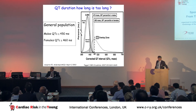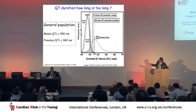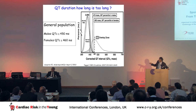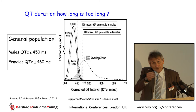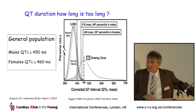Making this measurement is not straightforward because there is an overlap zone between subjects with genetic QT abnormalities and the normal population. There is no clear cutoff value. However, it has been proposed that in the general population, corrected QT must be less than 450 milliseconds in males and 460 milliseconds in females.